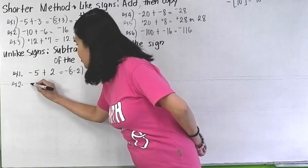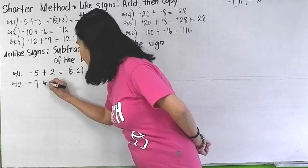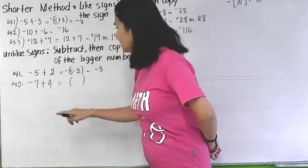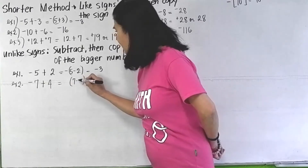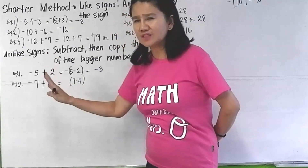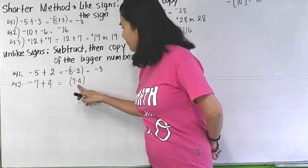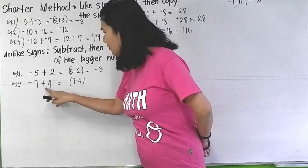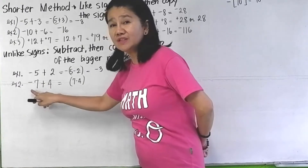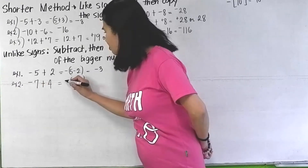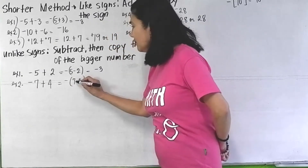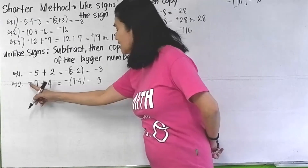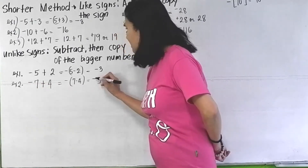In example 2, we have negative 7 plus 4. Subtract: 7 minus 4, ignoring the signs first. 7 minus 4. Then copy the sign of the bigger. Which is bigger, 7 or 4? 7 is bigger. What is the sign of the bigger? Negative. So 7 minus 4 is 3, and the answer is negative 3.